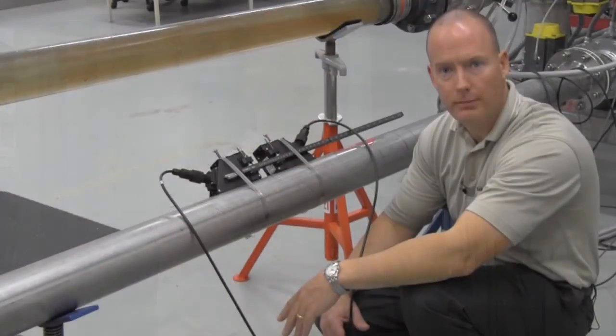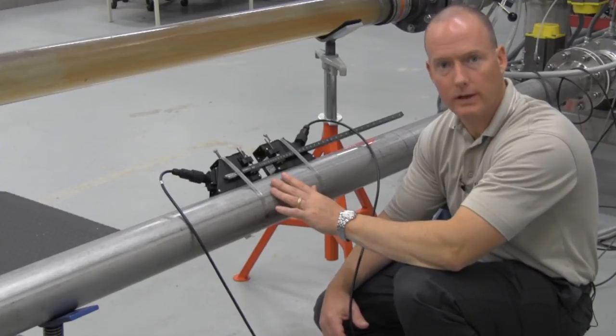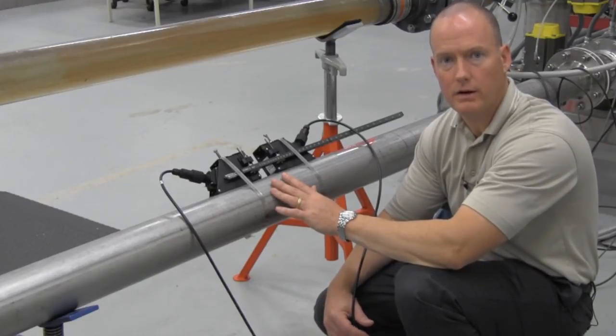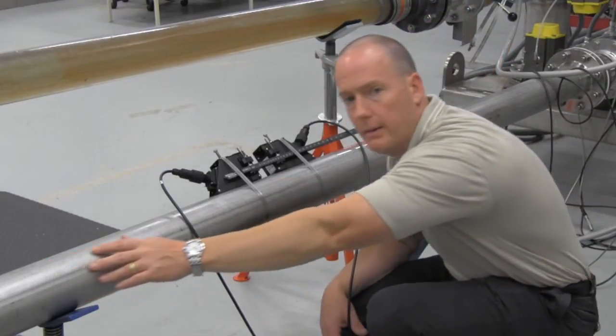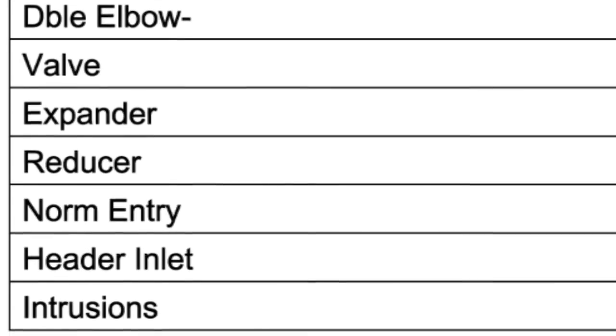We are now ready to go to the pipe where the sensors will be mounted. If possible, mount the sensors in a location where the flow of liquid is fully developed. This generally occurs by having 10 pipe diameters or more upstream of the sensors. For applications that do not meet this criteria, the FSTO20 has a built-in pipe configuration menu that offers upstream piping options the user can select to improve the measurement accuracy.